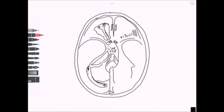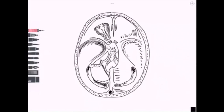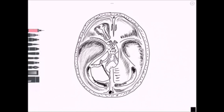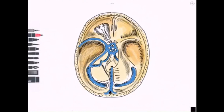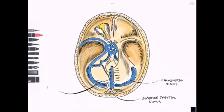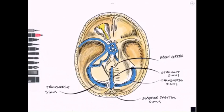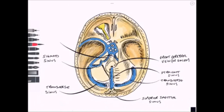We're going to clarify some of those structures from a superior view to help consolidate this knowledge. This superior view shows us looking down into the skull, where we can see the anterior, middle, and posterior cranial fossae, and a window cut through the anterior cranial fossa showing the optic nerve and the eye. Posteriorly we can see the superior sagittal sinus joining the confluence of sinuses, the transverse sinuses on each side, and the straight sinus running back towards the confluence with the great cerebral vein attaching to it.